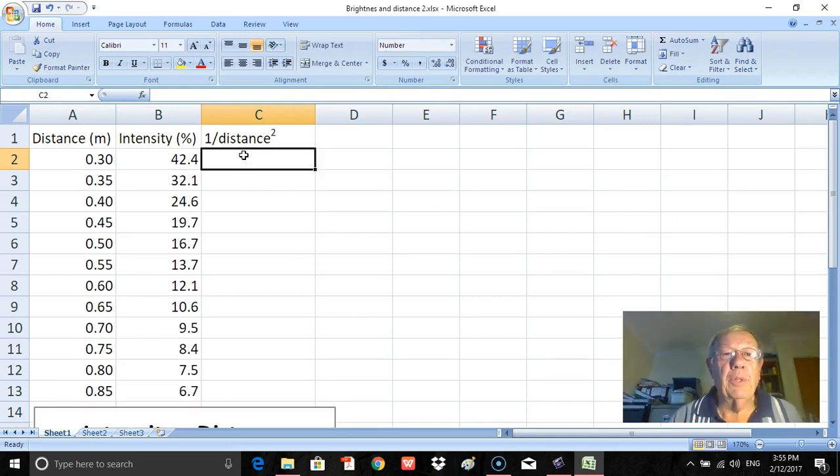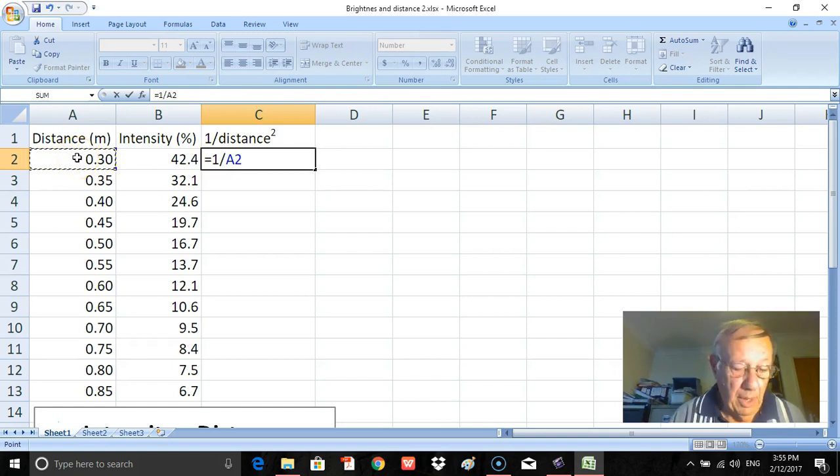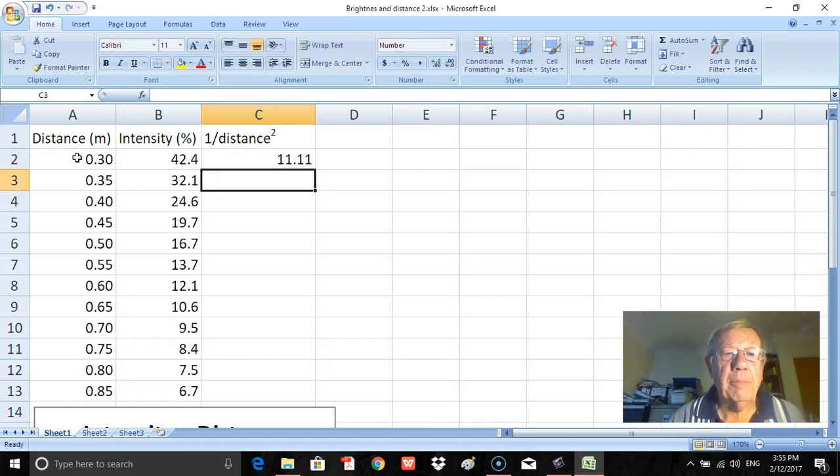And in order to get the data for the 1 over distance squared, all I'm going to do is put in a formula for starters. And all formulas must start with an equal sign, so type in equals 1 over this cell, the value in that cell squared. So that raised to the power of, this is the hat what we sometimes call it, 2. And if I press enter now, that's the value that I will get.